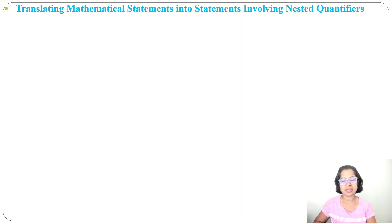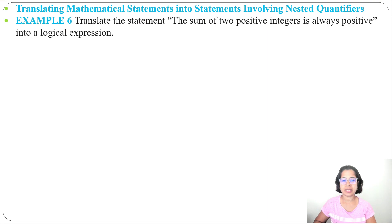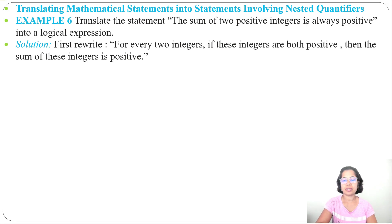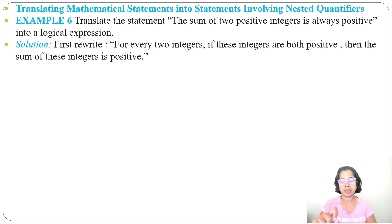In the previous lecture I already discussed nested quantifiers. Let's discuss how to translate mathematical statements into statements involving nested quantifiers. Example 6: translate the statement 'the sum of two positive integers is always positive' into a logical expression. First, we need to rewrite it as: for every two integers, if these integers are both positive, then the sum of these integers is positive. Now we'll involve two variables, x and y.